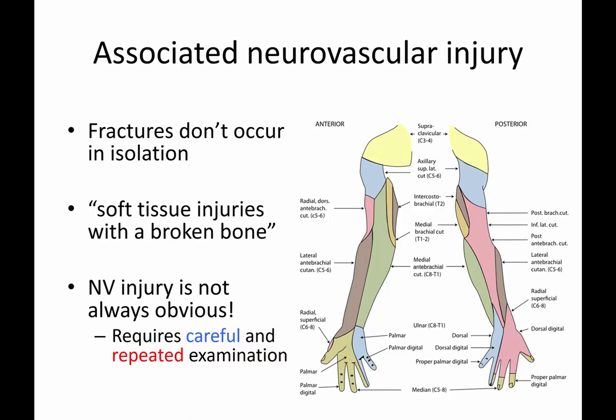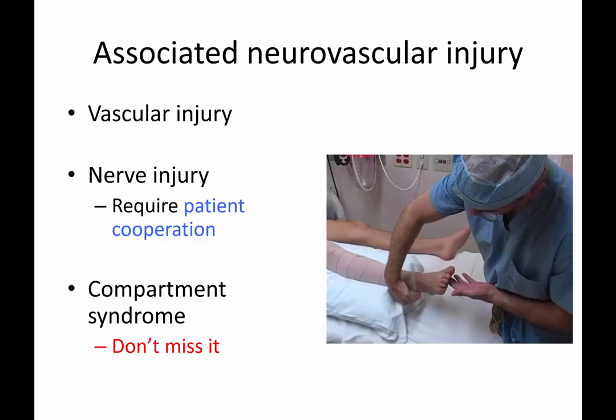Fractures don't occur in isolation. Some even say that a fracture is a soft tissue injury with a broken bone, so there's always a soft tissue injury when you have a fracture. Neurovascular injury is not always obvious — it requires careful and repeated examination. When you see a patient, you need to make sure that you rule out a vascular injury, at least by starting with a physical examination.